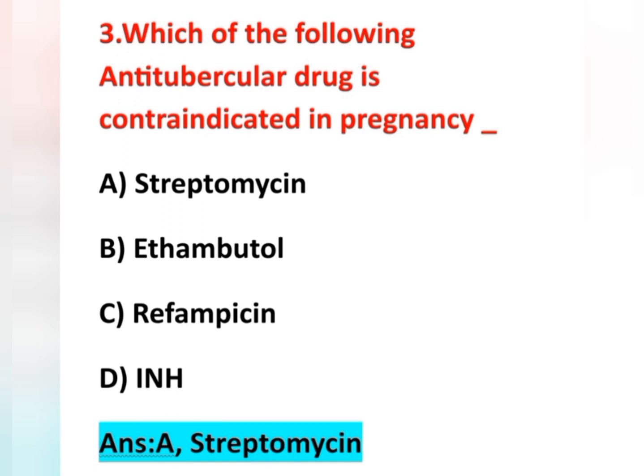So the anti-tubercular drug contraindicated in pregnancy is streptomycin — option A is the correct answer.